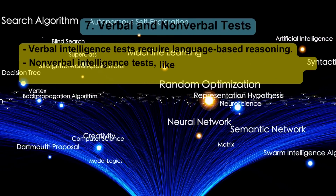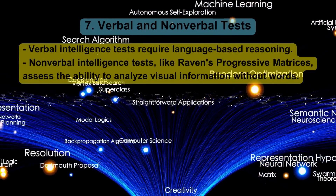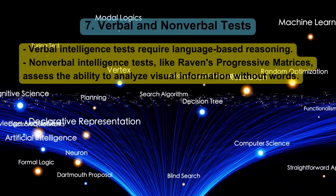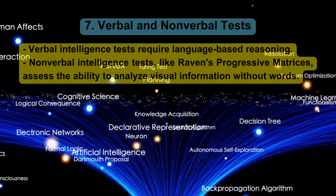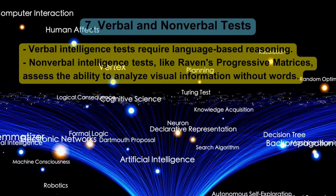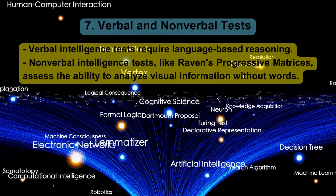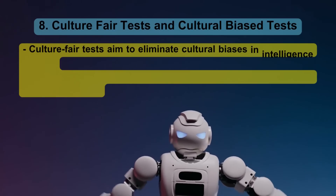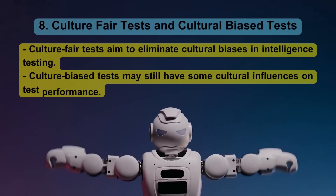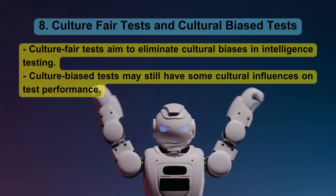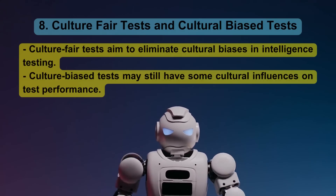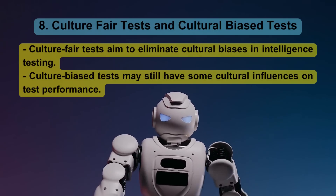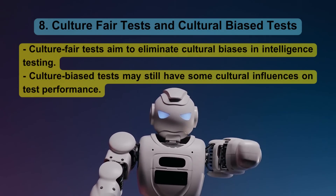Verbal and Nonverbal Tests: Verbal intelligence tests require language-based reasoning. Nonverbal intelligence tests, like Raven's Progressive Matrices, assess the ability to analyze visual information without words. Culture Fair Tests aim to eliminate cultural biases in intelligence testing, while culture-biased tests may still have some cultural influences on test performance.